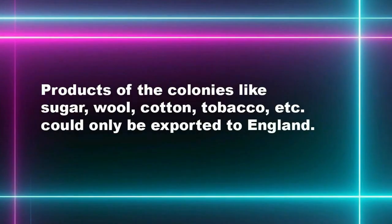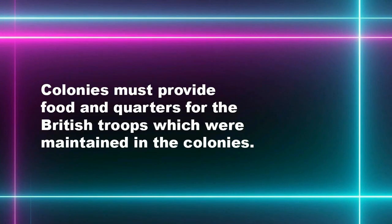The third law stated that products of the colonies — like sugar, wool, cotton, tobacco, etc. — could only be exported to England. The colonies were not allowed to trade with any country except England. The fourth law required the colonies to provide food and quarters for the British troops maintained in the colonies.